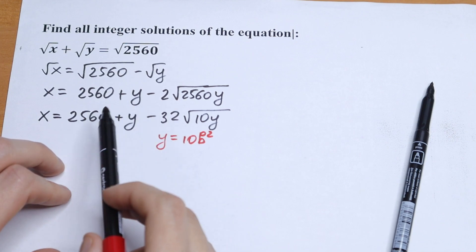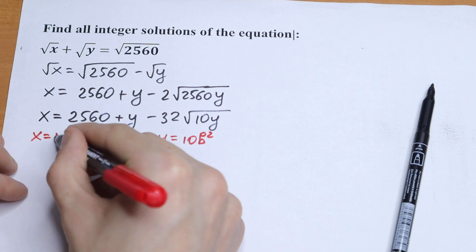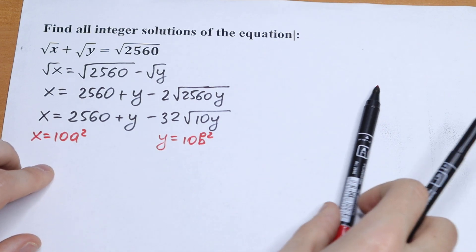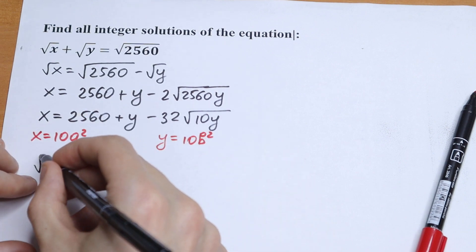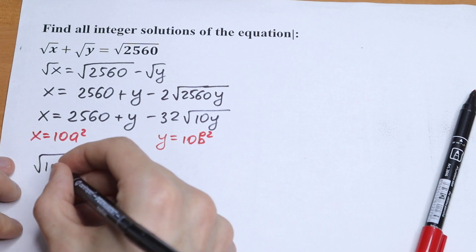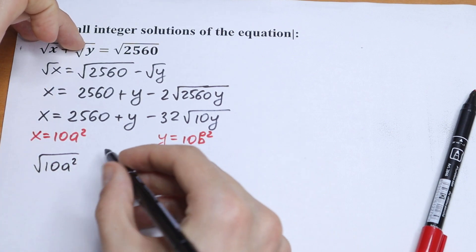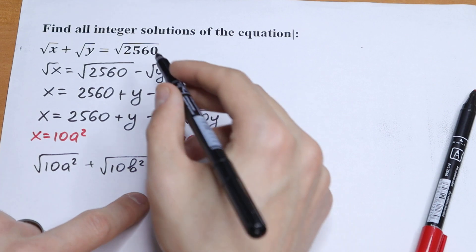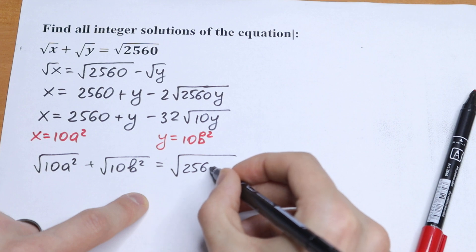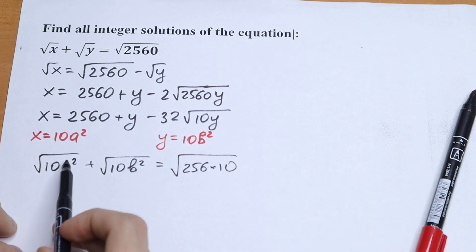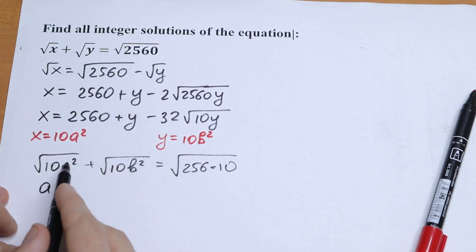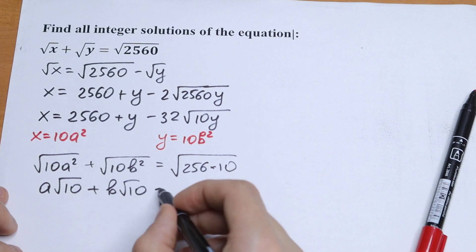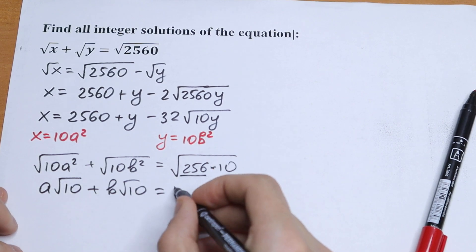By the same reasoning with x and y switched, x equals 10a squared. Assuming a and b are non-negative, we substitute into the original equation: square root of 10a squared plus square root of 10b squared equals square root of 256 times 10. This gives us a times square root of 10, plus b times square root of 10, equal to 16 times square root of 10.